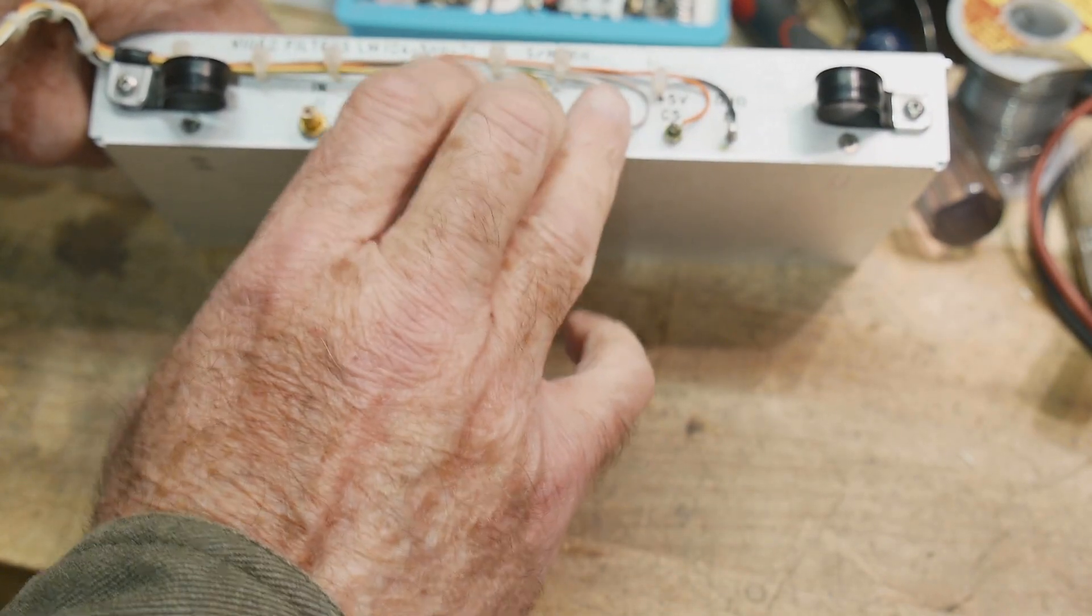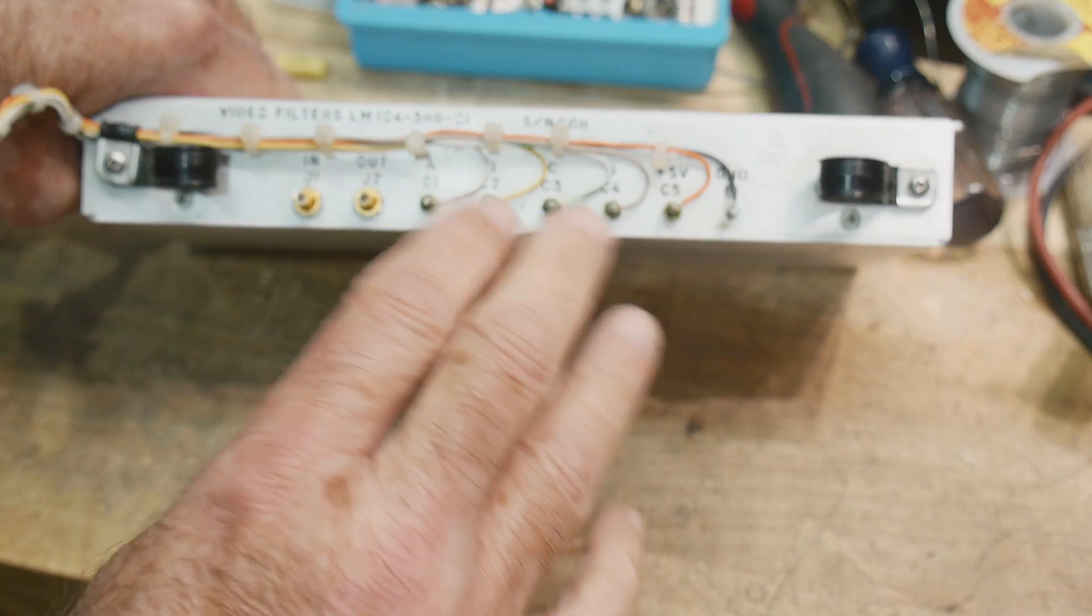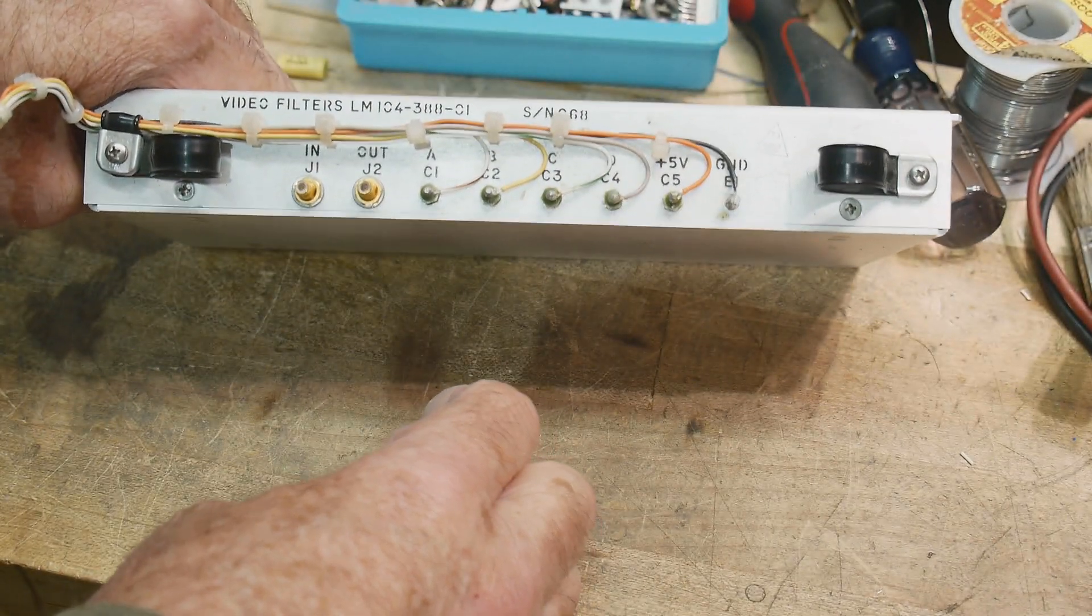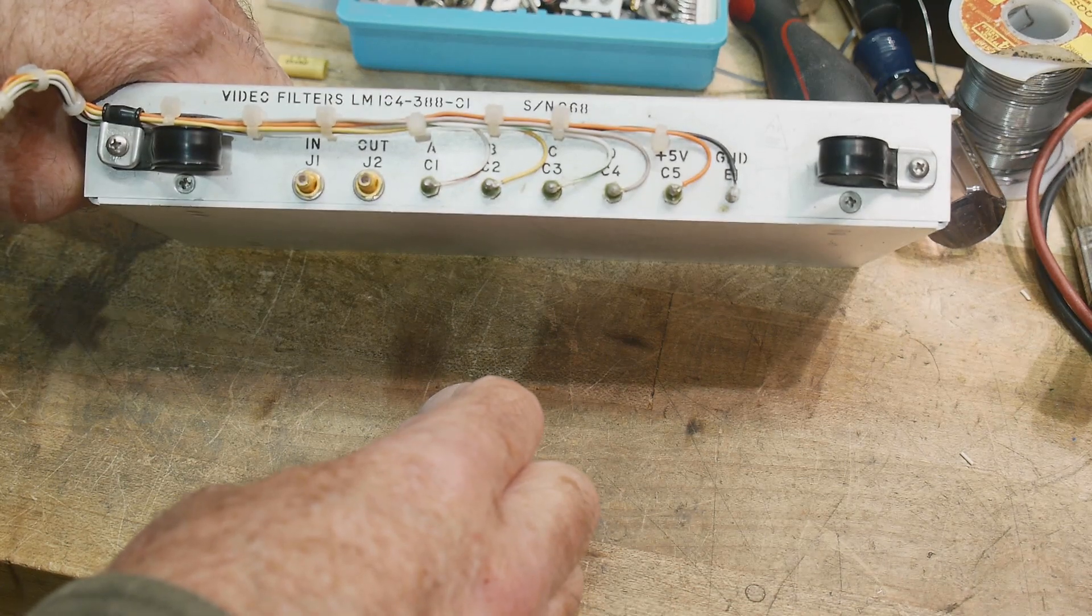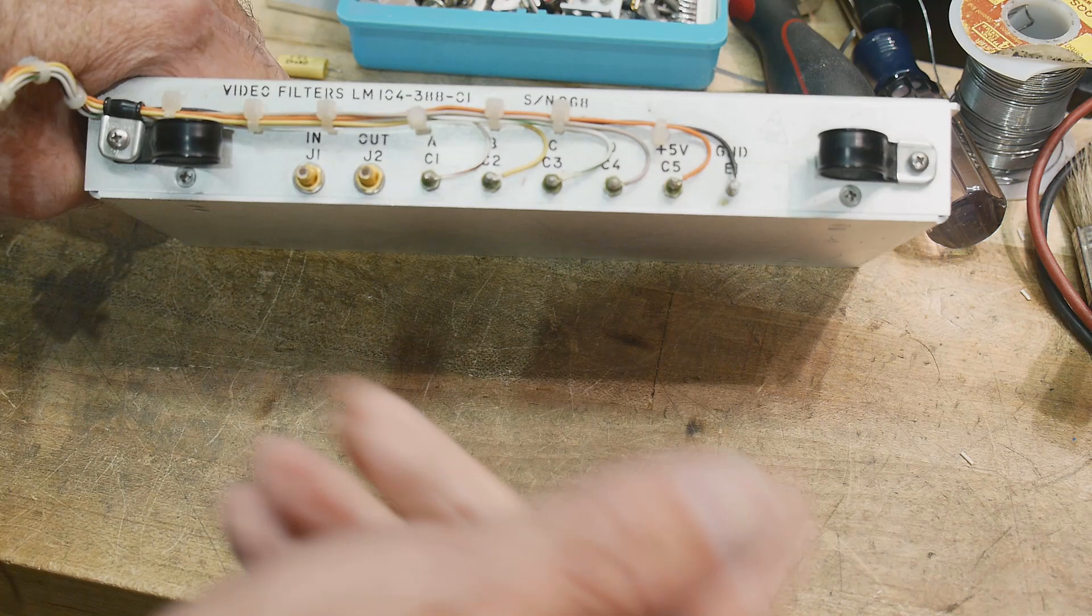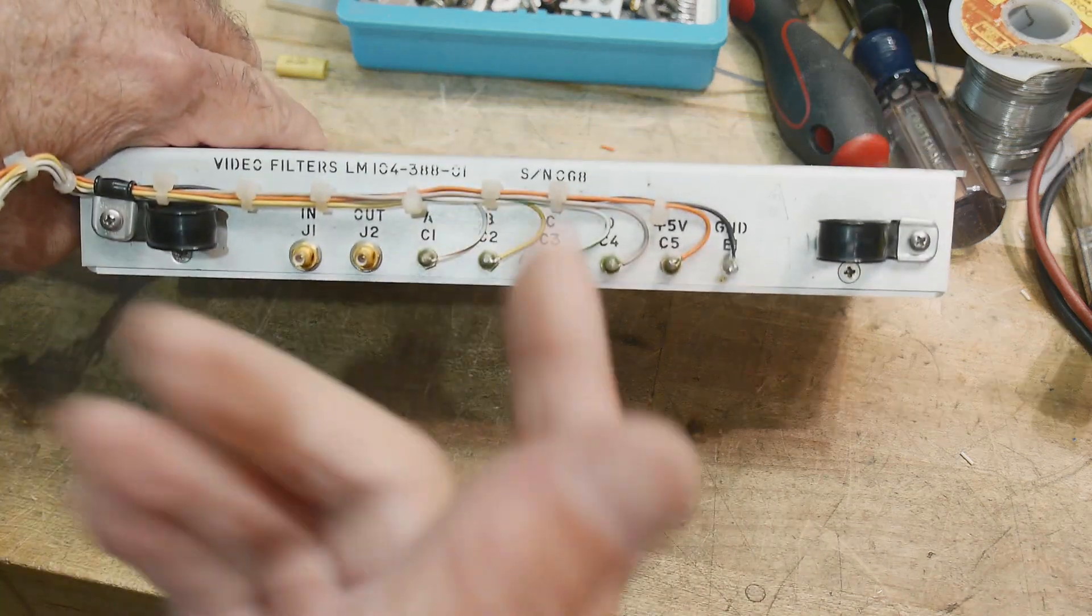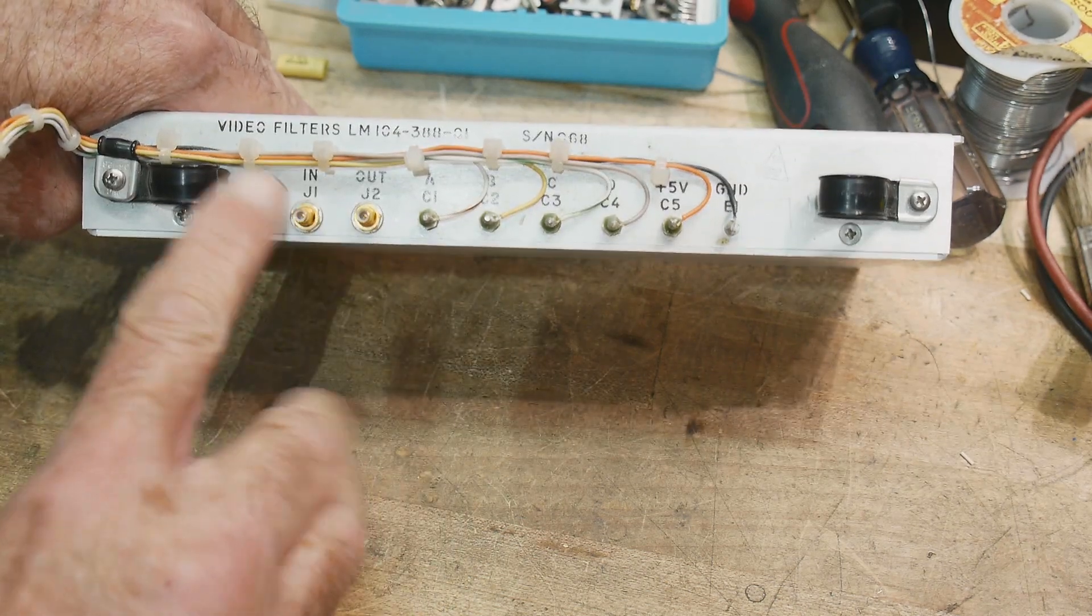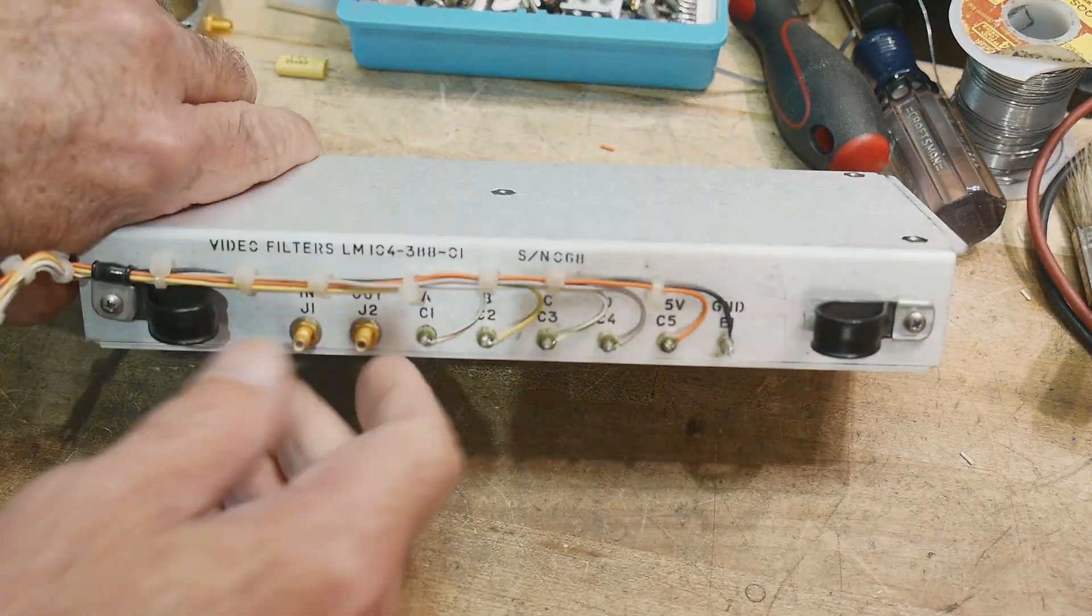And then we have 4 bits of control, so that selects which filter you want. And the one big chip there on the board is a 4 to 16 decoder. And then the other two chips are just driver chips to turn on and off the relays, add a little current. And then there's an input-output with the SMCs.